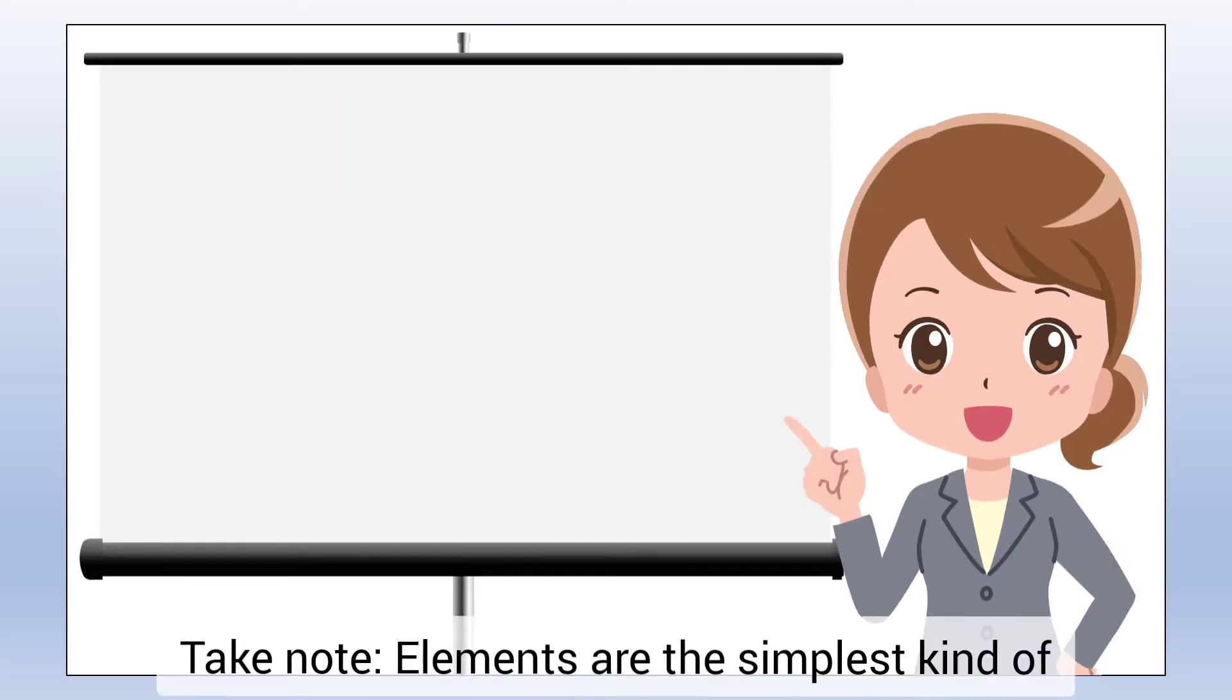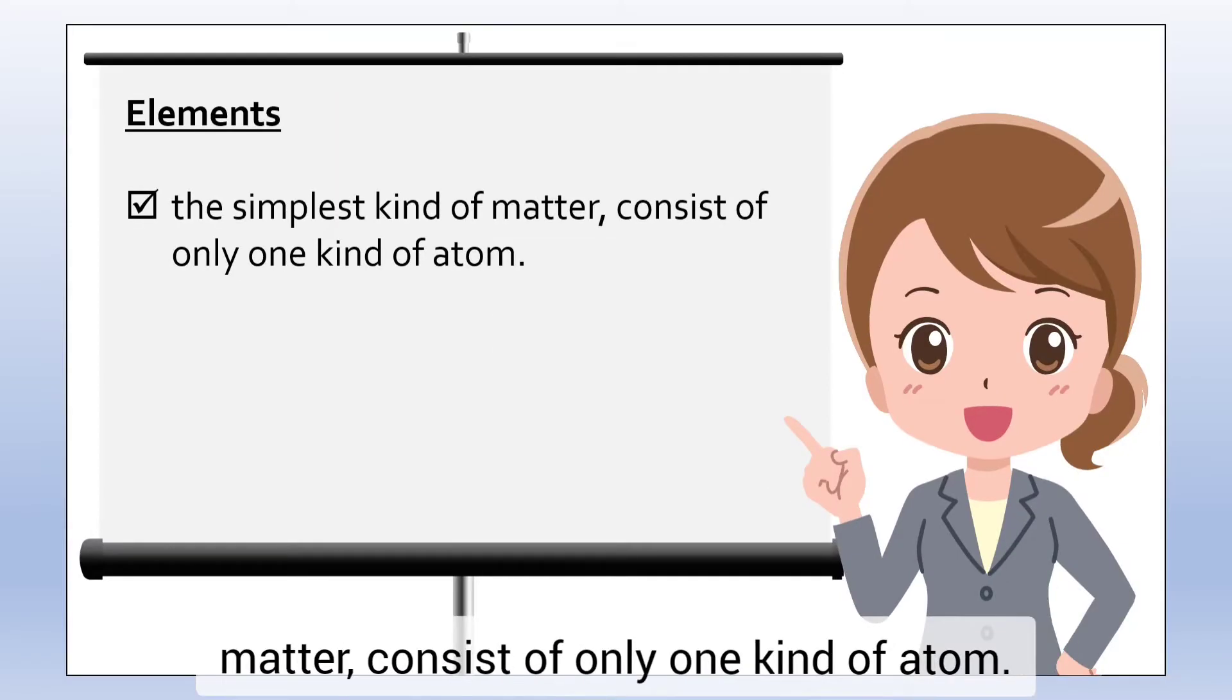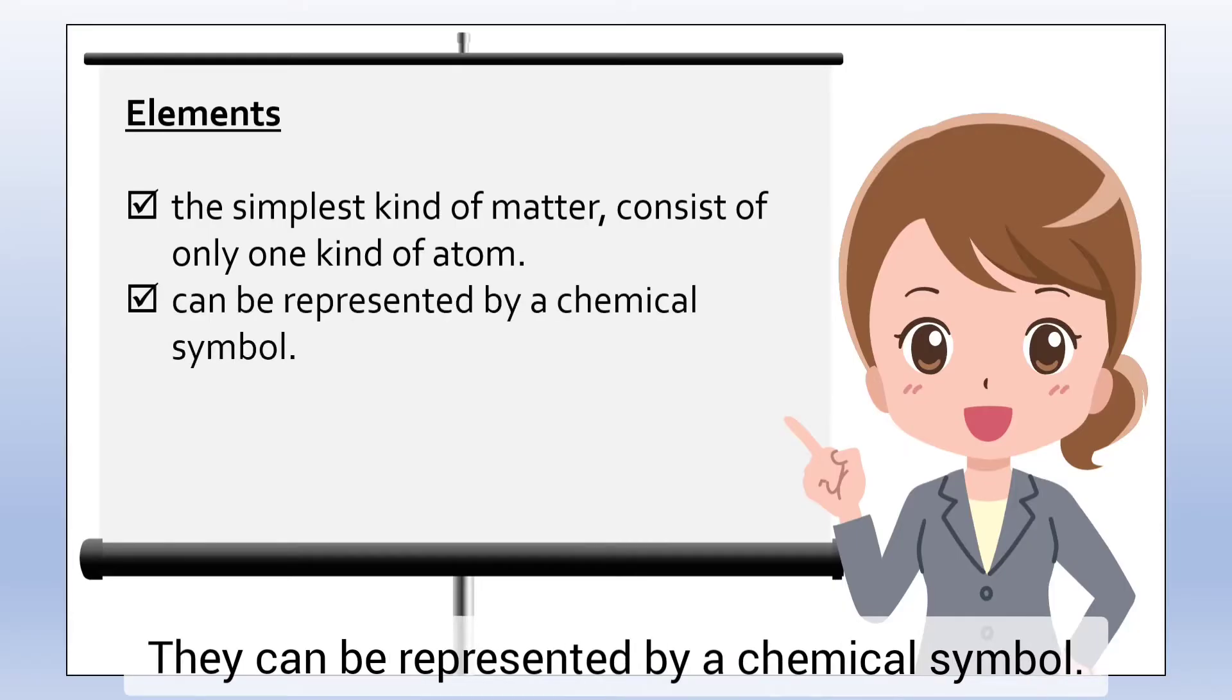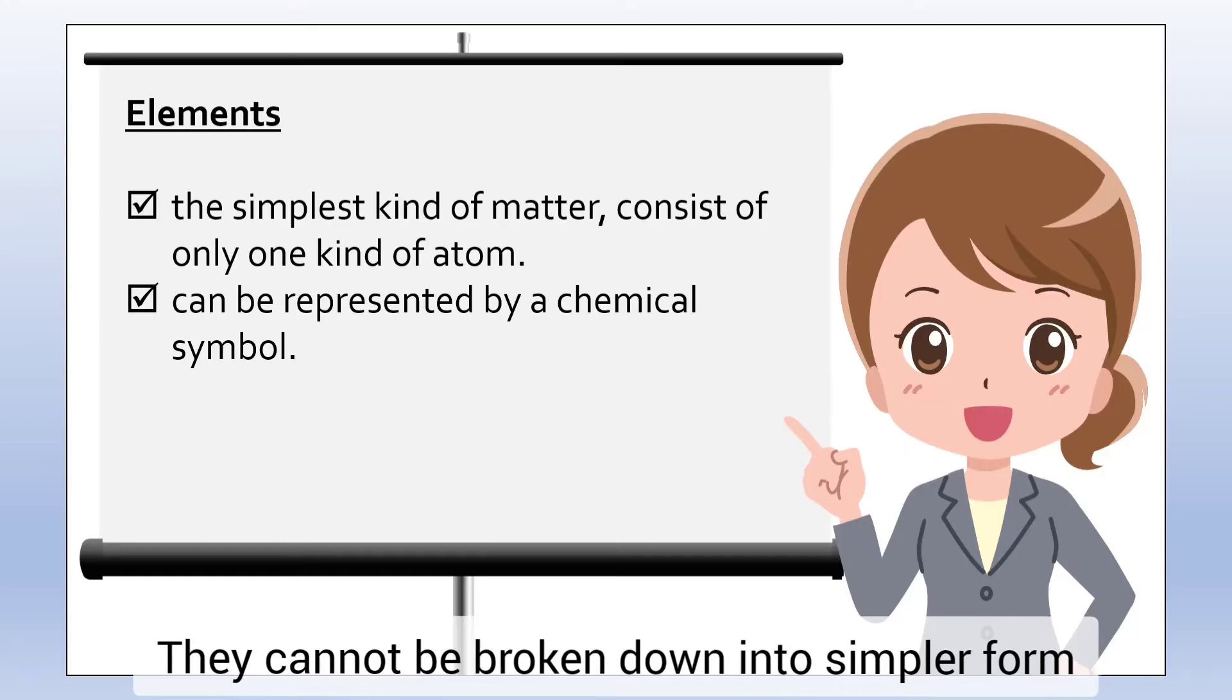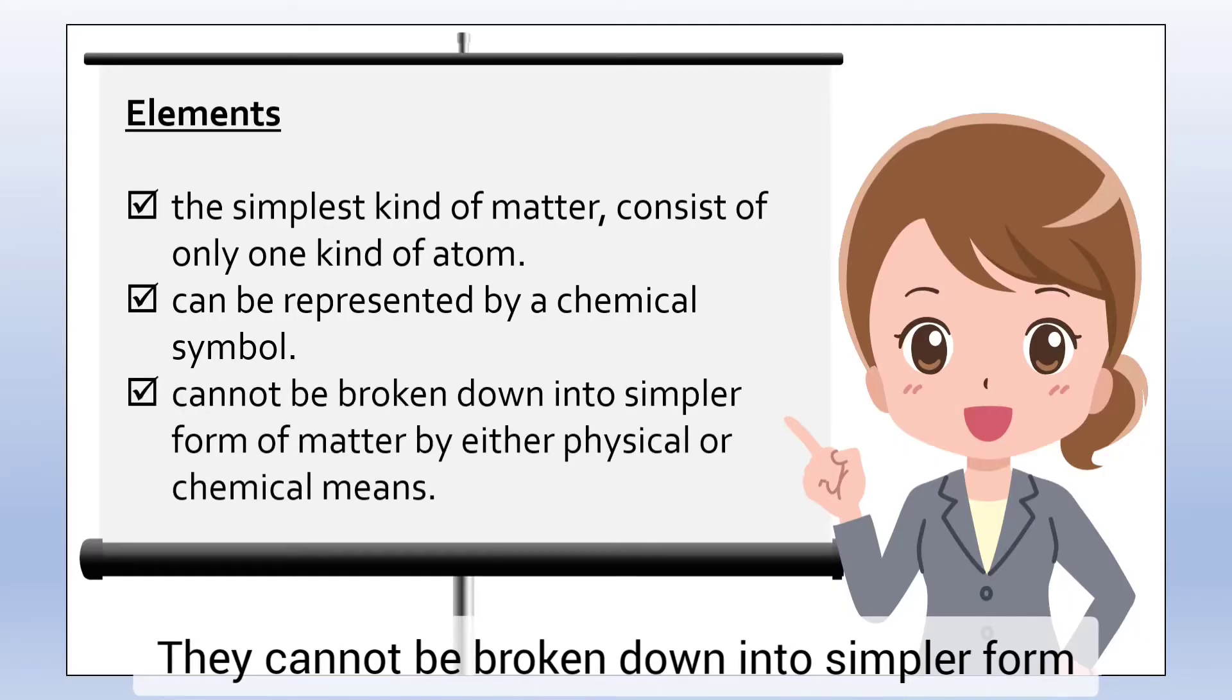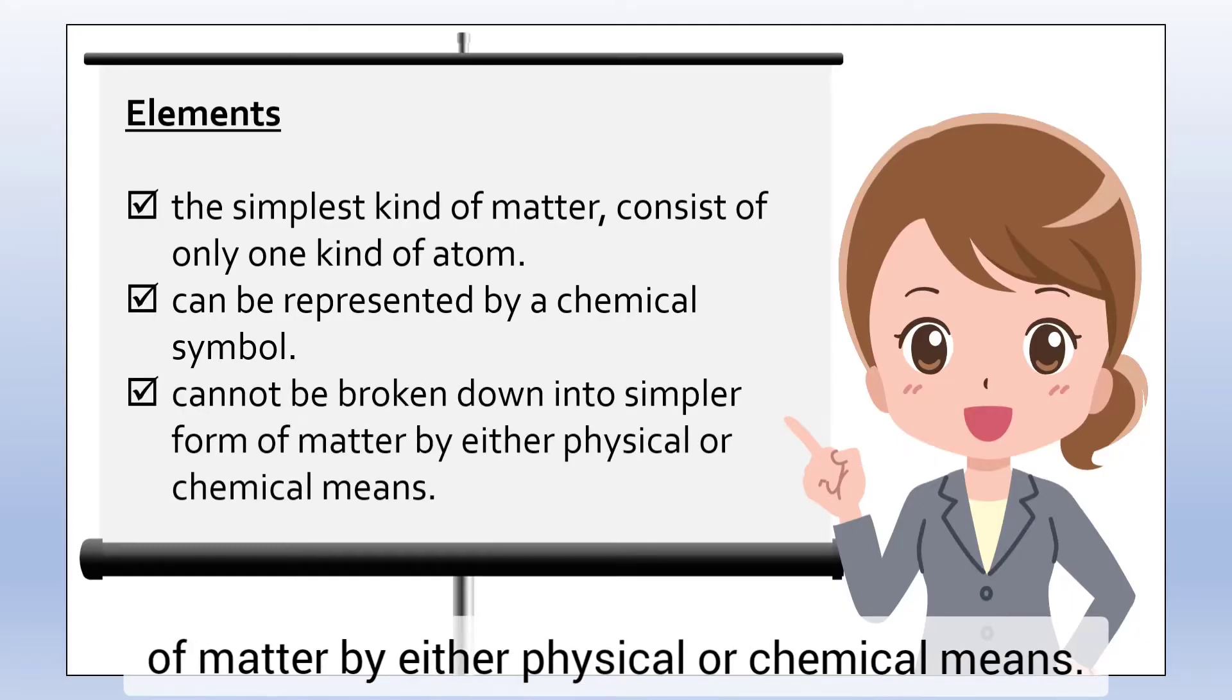Take note, Elements are the simplest kind of matter, consists of only one kind of atom. They can be represented by a chemical symbol. They cannot be broken down into simpler form of matter by either physical or chemical means.